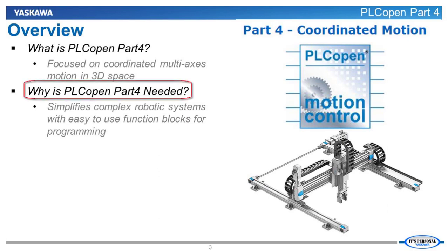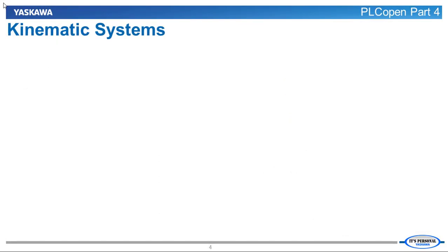Why is a specification like this needed? It is needed because it simplifies complex motion systems and allows them to be programmed using simple function blocks. So what complex motion systems, also known as kinematic systems, are simplified using PLCopen Part 4?